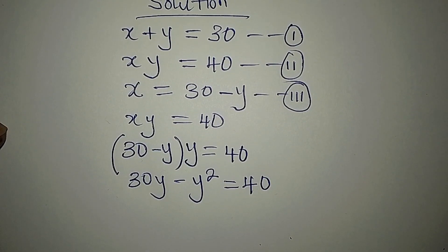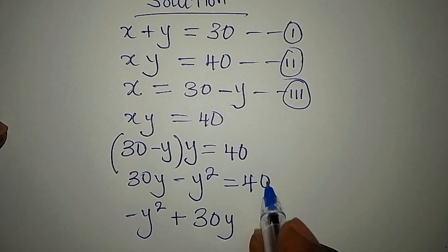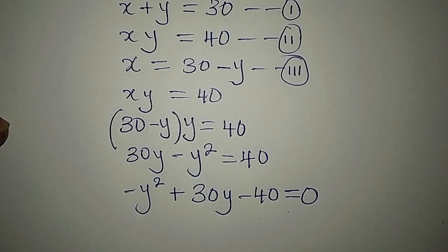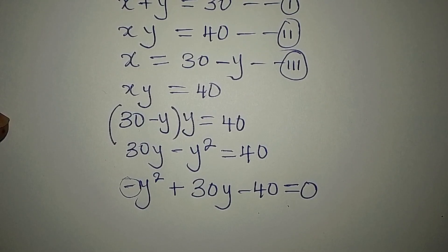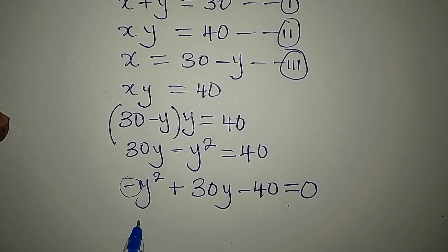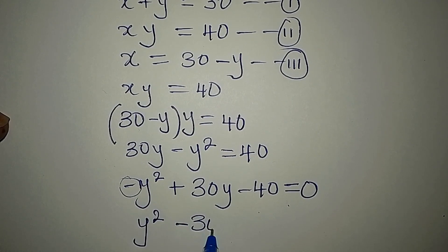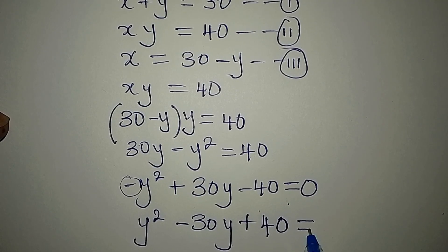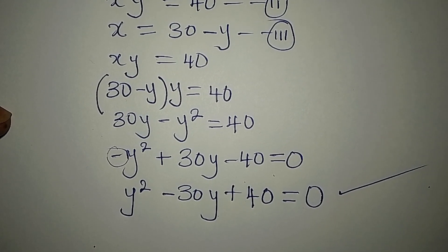The next thing I want to do is rearrange: negative y squared plus 30y minus 40 equals zero. This is a quadratic equation, but this negative leading term — we want to eliminate it. So we'll multiply all terms by negative one: negative times y squared gives positive y squared, negative times 30y gives negative 30y, and negative times minus 40 gives plus 40. So now we have y squared minus 30y plus 40 equals zero.